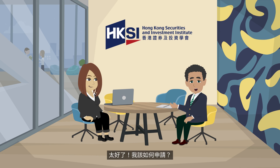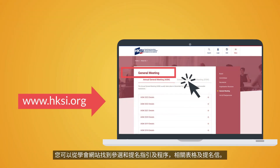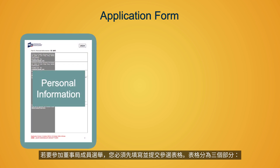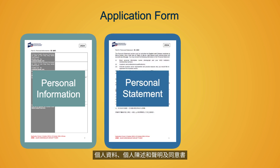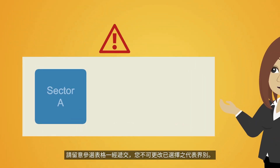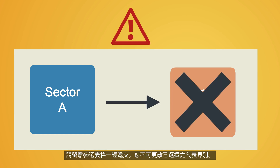That's great. How can I apply? You can find the application and nomination guidelines and procedures, along with the related forms and letters, from our website. To participate in the board election, you first need to complete and submit the application form, which includes three parts: personal information, personal statement, and declarations and consent. As a quick reminder, once you have submitted the application form, you won't be able to change your business sector.